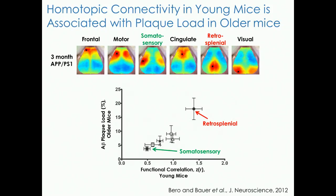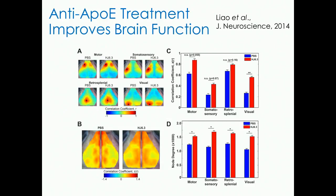There have been a number of follow-up studies with Dave Holtzman's group. In one led by Fan Liao, mice were given an anti-ApoE antibody treatment. We found behavioral rescue and fewer plaques developed with this treatment, but we also see functional restoration in certain networks — primarily between visual and somatosensory compared to PBS controls. This shows that FCOS is sensitive not only to functional disruption but also functional restoration.